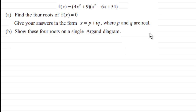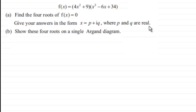What we've got then is f(x) equals four x squared plus nine, multiplied by x squared minus six x plus 34. What we've got to do in part (a) is find the four roots of f(x) equals zero and give our answers in the form x equals p plus iq, where p and q are real.